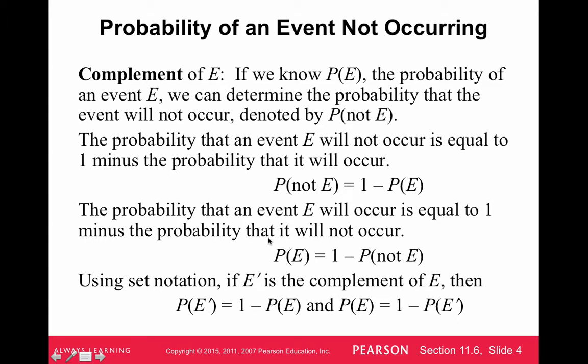So this is basically what this is talking about. Sometimes they use complement notation with the E apostrophe, like we saw in exam one. So this is just a little bit more formal stuff, but it's pretty easy knowing the probability of an event will not occur. It's just 1 minus the probability of that event.